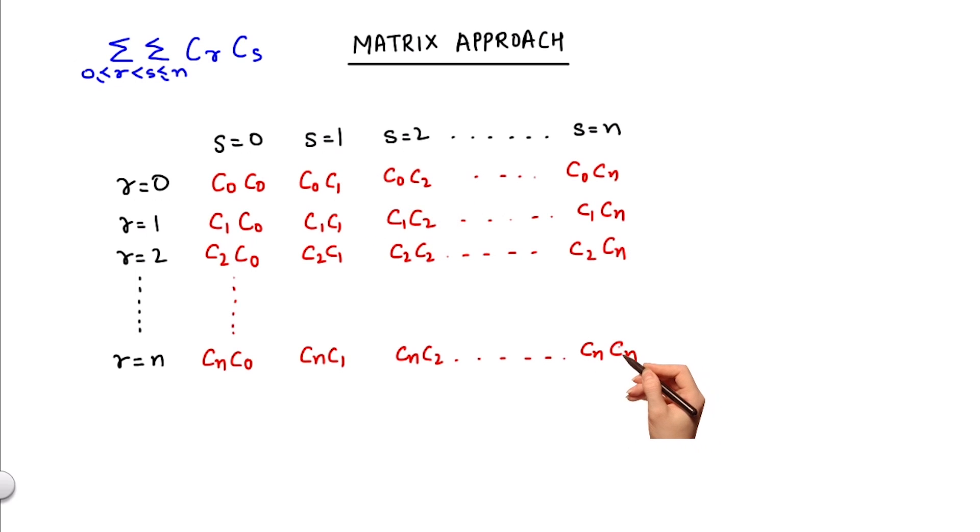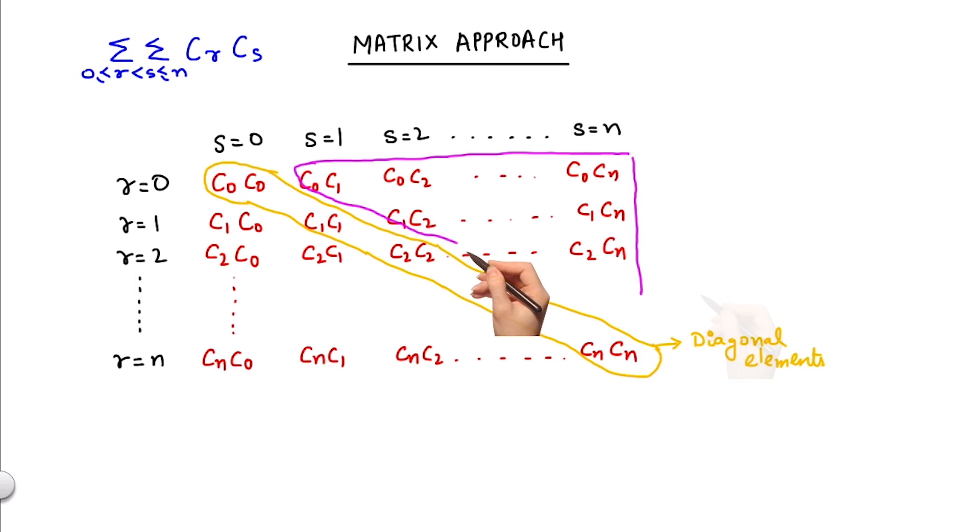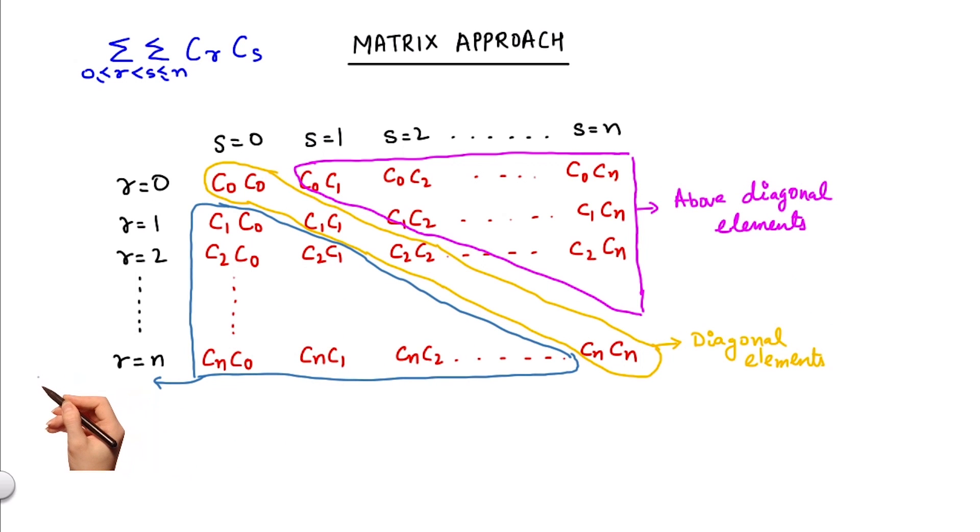Now we will refer to the elements along the diagonal of the matrix as the diagonal elements, elements above the diagonal as the above diagonal elements, and the elements below the diagonal as the below diagonal elements.